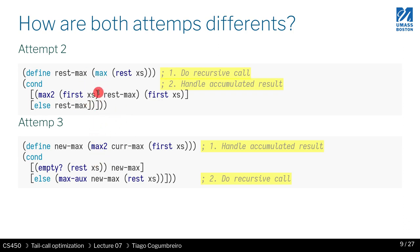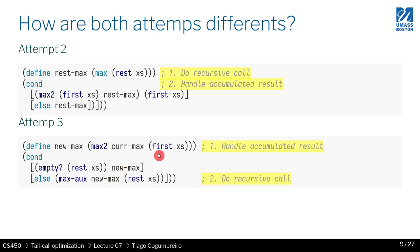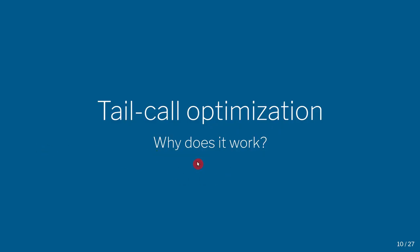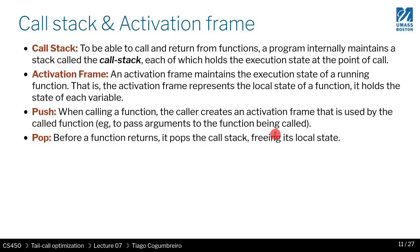In attempt two, the one from our last lesson, we first do the recursive call and then handle the accumulated result — we recompute the maximum. In attempt three, we first recompute the maximum and then do the recursive call. The recursive call is the last thing done, and that is very important because it enables so-called tail call optimization.